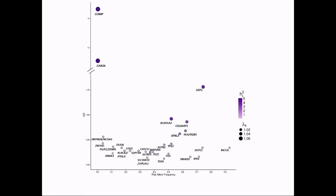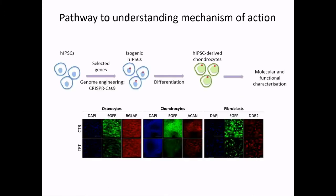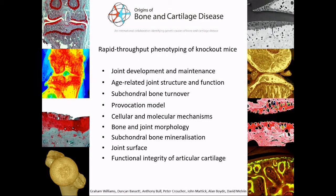In terms of osteoarthritis, there are a couple of large-effect rare variants identified in the Icelandic population, but the vast majority are common-frequency variants residing in non-coding sequence. So it's quite hard to go from variant to gene. We have been differentiating human induced pluripotent stem cells into chondrocytes and using CRISPR-Cas9 technology to introduce the variants, then looking at molecular and functional changes of the derived chondrocytes. This work can give rise to mechanistic hypotheses tested in animal models. In collaboration with the Origins of Bone and Cartilage Disease Consortium — a strategic award funded by Wellcome — we have been knocking out genes in mice and conducting high-throughput musculoskeletal phenotyping of those mouse lines.